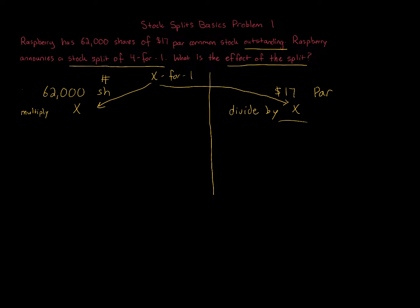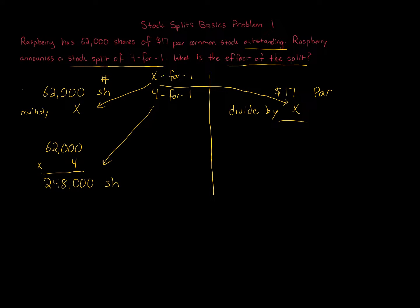By doing this you are adjusting for the respective change. So we multiply 62,000 by four (it's a four-for-one split): 62,000 multiplied by four gives us 248,000. So we go from 62,000 shares to 248,000 shares. The shares have gone up significantly, but economically not much is changing, because at the same time you adjust the par: $17 divided by four gives you $4.25 as the new par value per share.